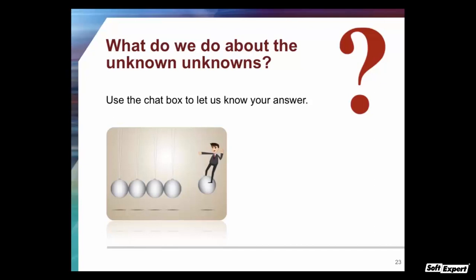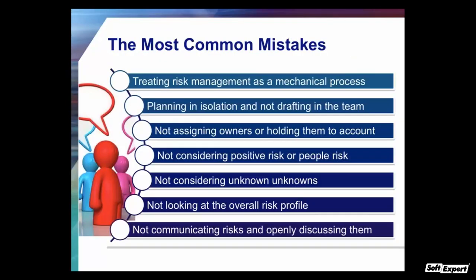What are the most common mistakes in risk management? Mistake number one: treating risk management as a mechanical process where you just fill in a risk register and think you've done it well. That is so far from the truth — there is much more thought needed. Mistake number two: planning in isolation and not drafting in the team. Risk management is a collaborative effort. You want to create a risk culture in your organization where everybody is thinking about risks, owning risks, and naturally mitigating them — not just the project manager.